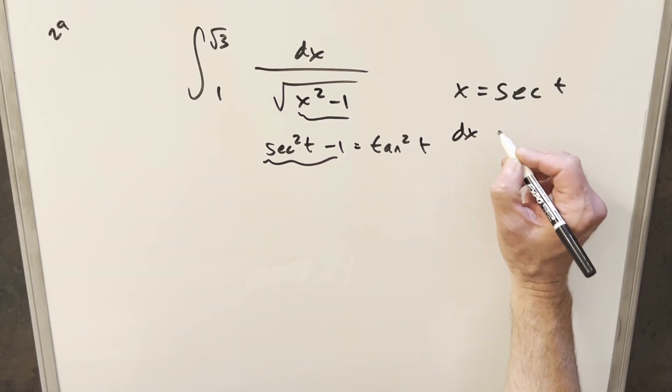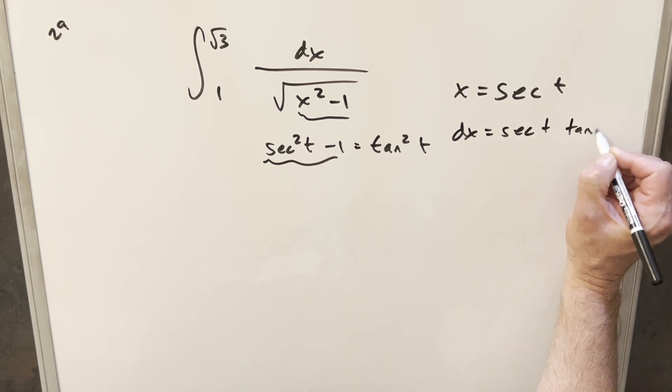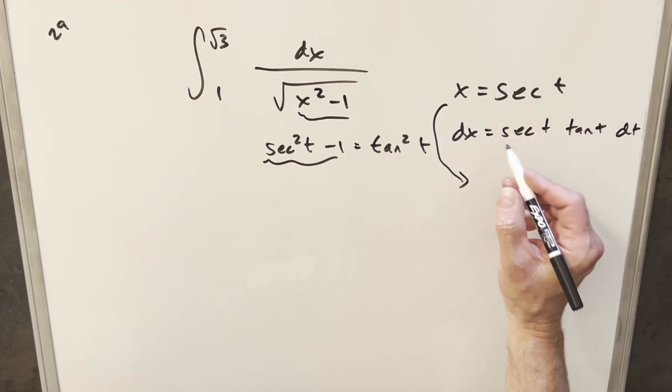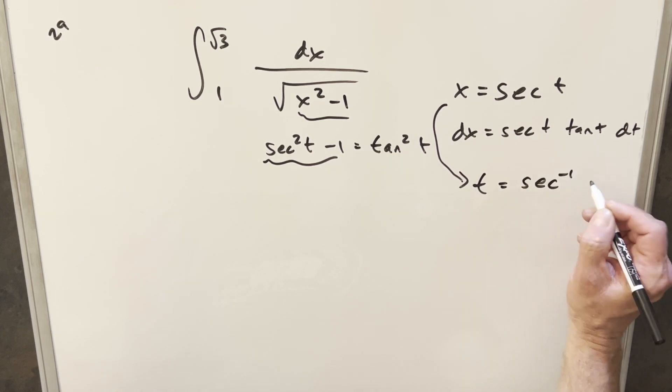So from here, let's just take a derivative on this. dx is going to be secant t tan t dt, and let's just get our value for t. Using the inverse, this is going to be secant inverse of x.